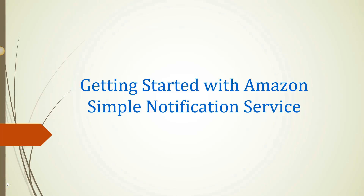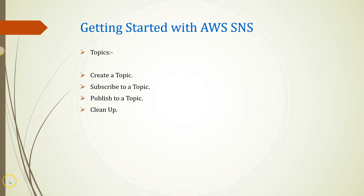Now let's talk about getting started with Amazon Simple Notification Service. The topics covered are: create a topic, subscribe to a topic, publish to a topic, and clean up. We will see all four topics on the AWS Management Console practically.